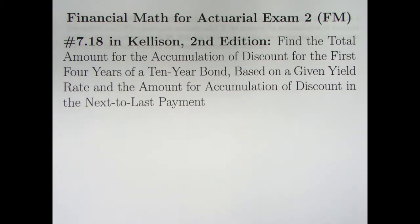In 7.18, we're going to find the total amount for the accumulation of discount for a bond sold at a discount for the first four years of a 10-year bond, based on a given yield rate and amount of accumulation of discount in the next to the last payment. Now, it sounds like it might be kind of difficult, and if this is new to you, it probably is, but hopefully if you've had enough practice with bonds, it's not going to be too bad.